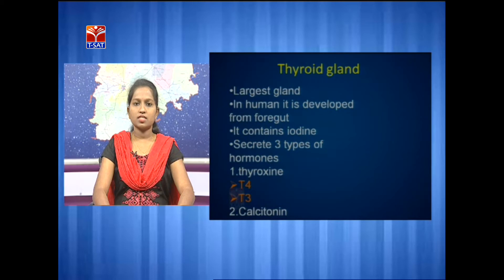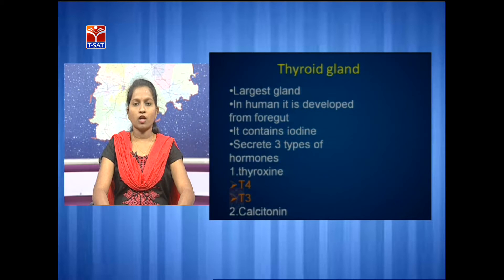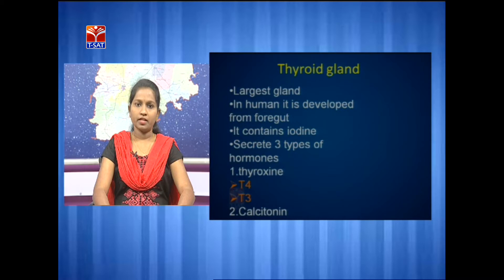The next endocrine gland is the thyroid gland. It is the largest endocrine gland, which is a bilobed structure with a butterfly shape. This thyroid gland contains two types of cells: follicular cells and parafollicular cells. In the human embryo, it is developed from the foregut. This thyroid gland contains iodine, and during pregnancy and puberty conditions, the requirement of iodine increases.